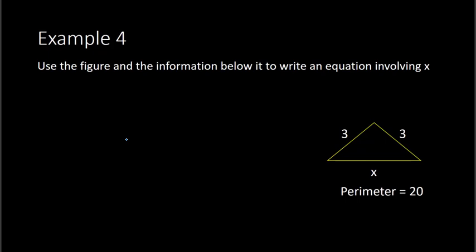Example four. We are using the figure and information below to write an equation involving x. So it gives you the perimeter of the triangle equaling twenty, and then it gives you the side lengths being three, three, and x. So perimeter simply means the distance all the way around. Or if you add all these side lengths, so you add three plus three plus x, that gives you the perimeter.